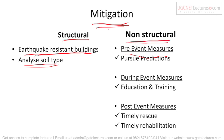The second type is non-structural mitigation — measures not in the form of buildings. The first is pre-event measures: what can we do before an earthquake arrives to reduce its loss and effect? The first is to follow predictions — warnings issued by meteorological departments or other authorities that predict and warn in advance that an earthquake may occur at a certain time.